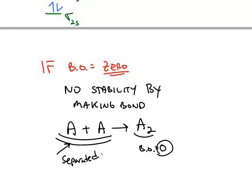In order for a bond order to be stable, it has to be a positive number. So it has to be greater than a bond order of zero.